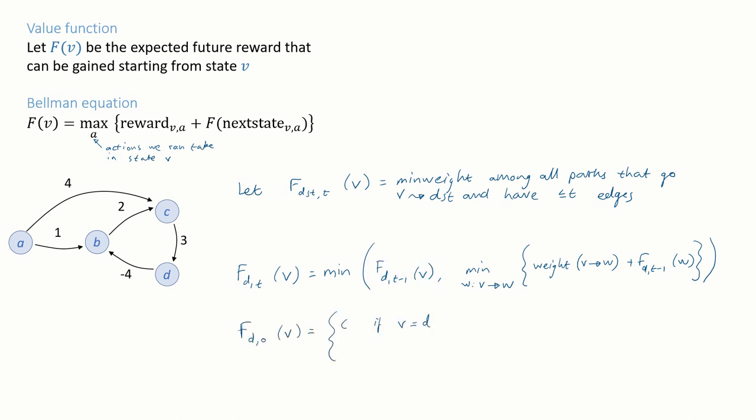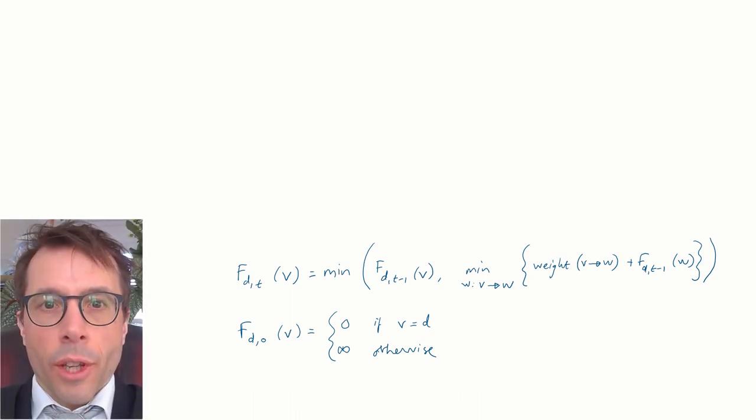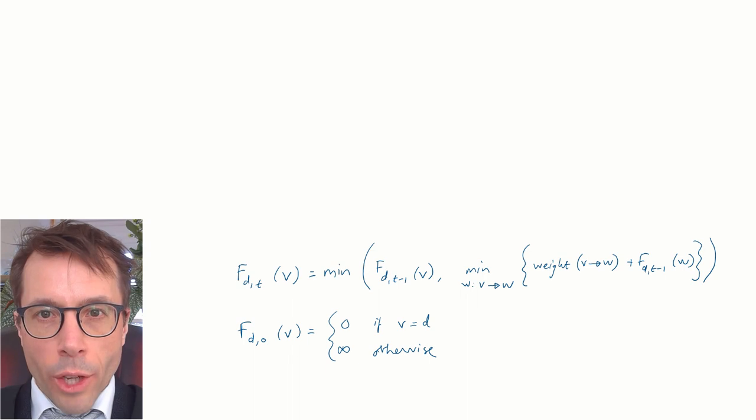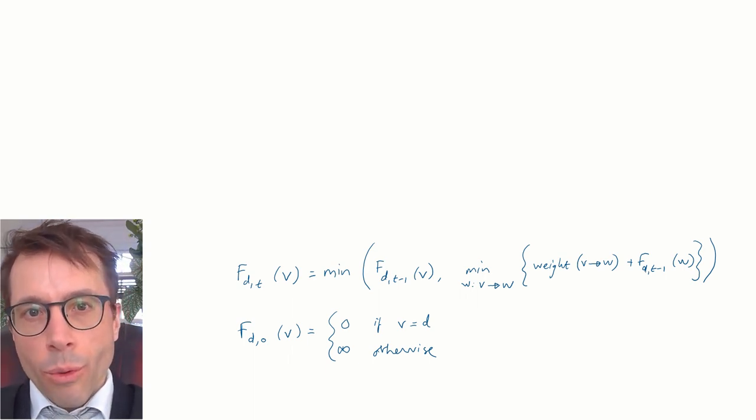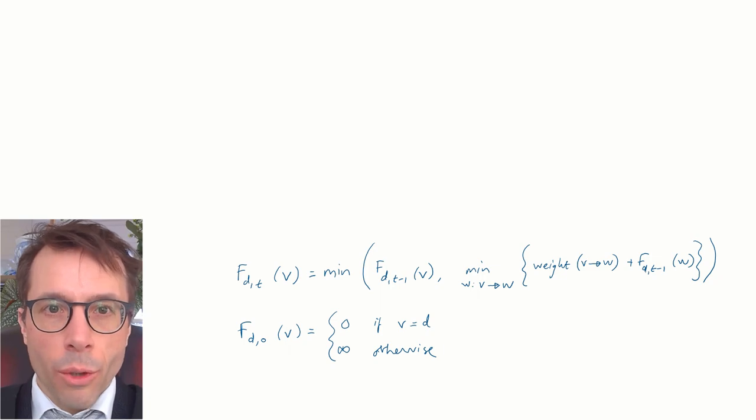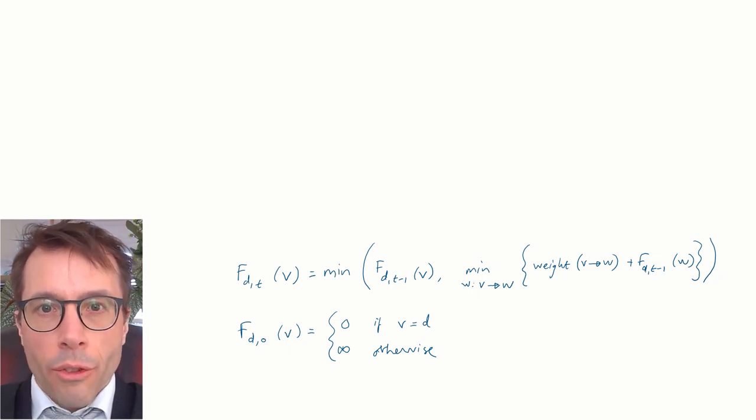And let's write out the boundary case. If we only have zero edges left to go, the minimum weight is zero if we're already at our destination, infinity otherwise. Okay, so this gives us a recurrence equation and an initial state equation, so we can just solve them iteratively. Start at t equals zero, then compute the solution for t equals one, then t equals two, and so on, as far as you want to go.